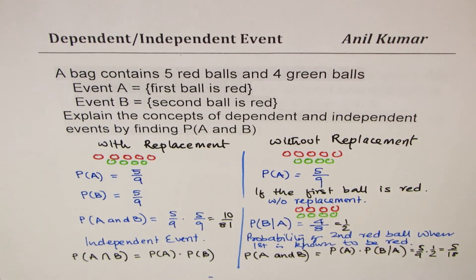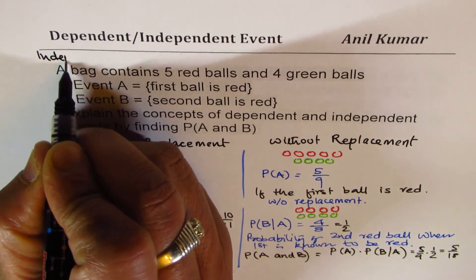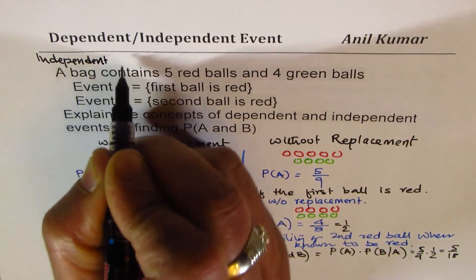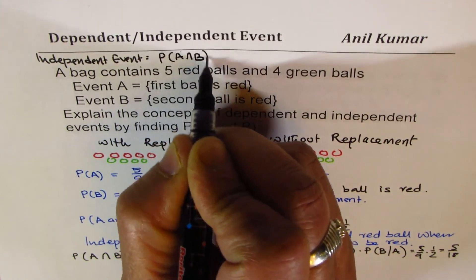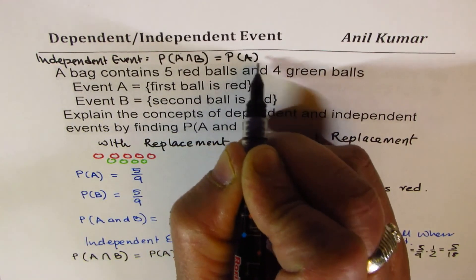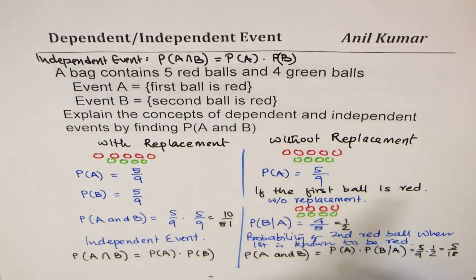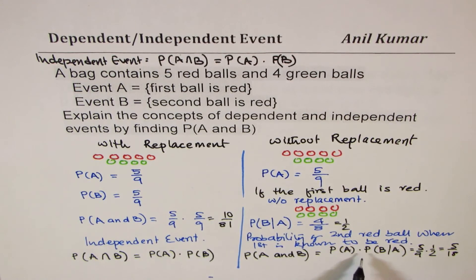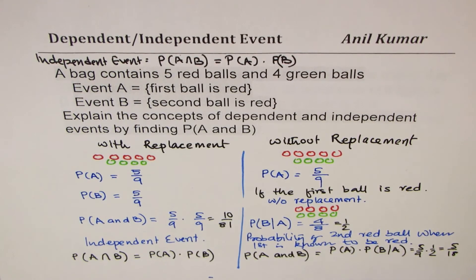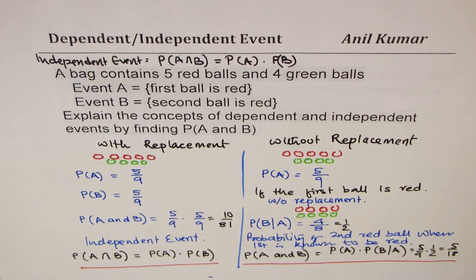What we notice is that for independent events, the probability of A intersection B is equal to the product of the probability of A and B. However, for dependent events, it is the product of the probability of A and the conditional probability of B happening when A has already occurred. That is a huge difference, and that is how we can summarize the two cases.